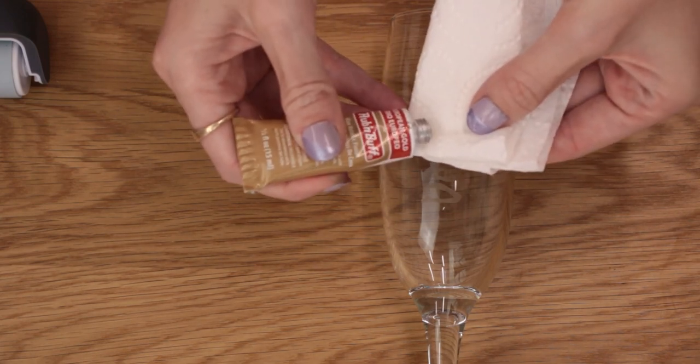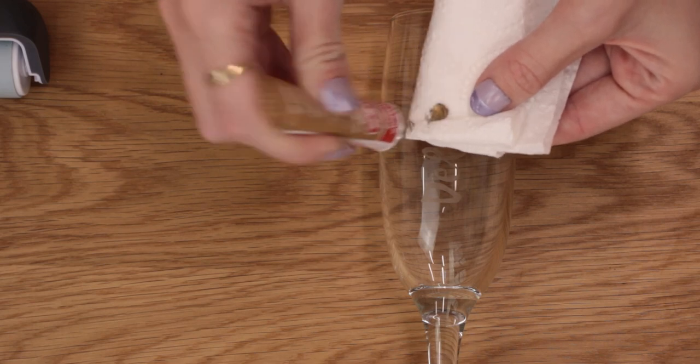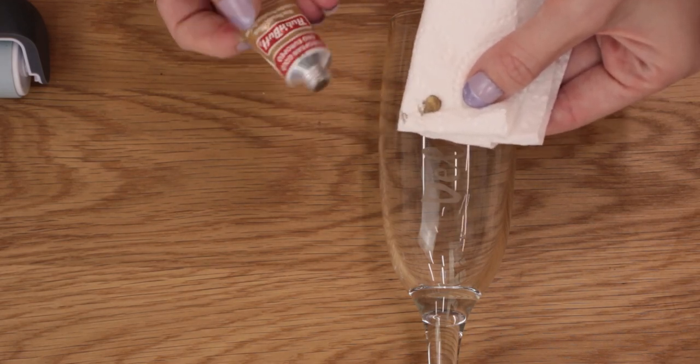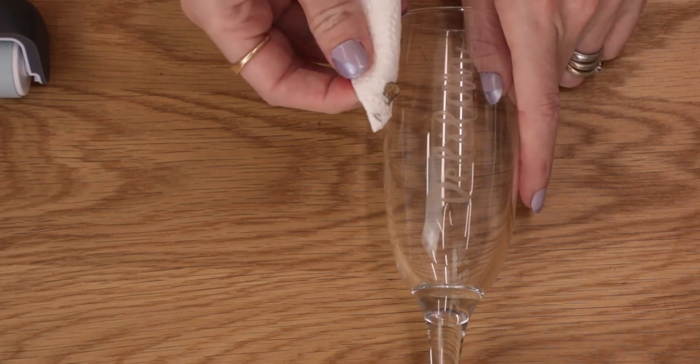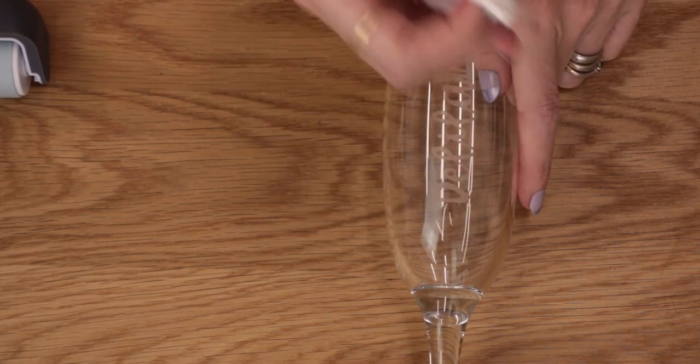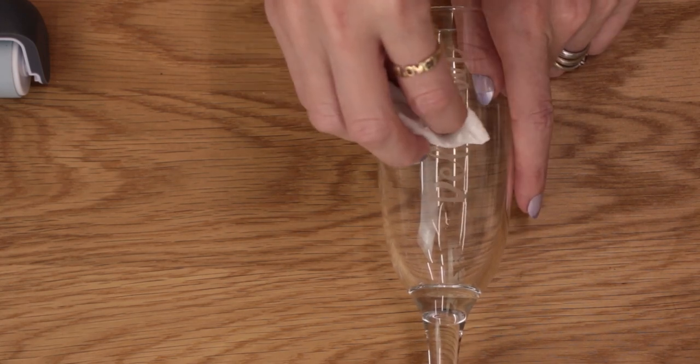You only need a very small amount of this stuff so I'm just going to put it onto the kitchen towel. The tiniest bit goes a long way it really does. And then I'm going to buff it into the glass and if I get it on places that aren't etched it really doesn't matter.